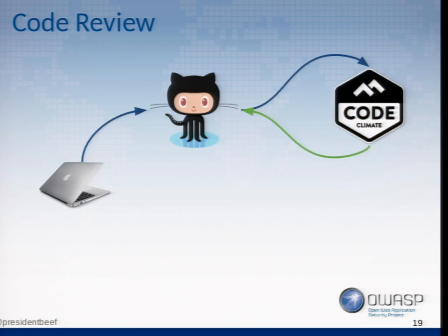Another approach: if you have GitHub and a pull request-based system, when you open a pull request it triggers some jobs — Code Climate, Travis, whatever tool you want to use. It triggers that job, it runs, and you get a yes-or-no answer that goes back to your pull request. It's visible in the pull request whether this passed or failed.